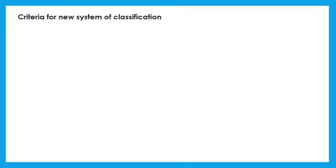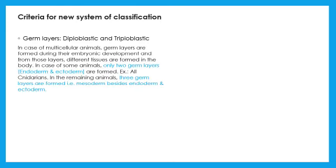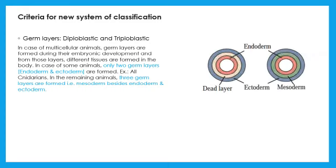Third criteria for new system is germ layers. Germ layers are formed during initial grade of any multicellular animal. And those layers give rise to new tissues. Primitive animals are diploblastic. That is, they have only two layers. Ectoderm and endoderm. For example, phylum Cnidaria. The higher animals are triploblastic. They have three layers. Ectoderm, endoderm and mesoderm.